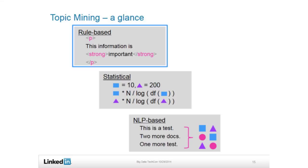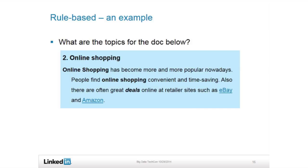There are three main approaches to solving this problem: rule-based, statistical methods, and NLP methods. By rule-based, we mean we create certain rules by intuition or heuristics to govern what patterns can extract important things. Looking at this example — a document with the headline 'Online Shopping' and one paragraph — what do you guys think the topic should be? Online shopping is definitely the most important topic. Why? It appears three times.